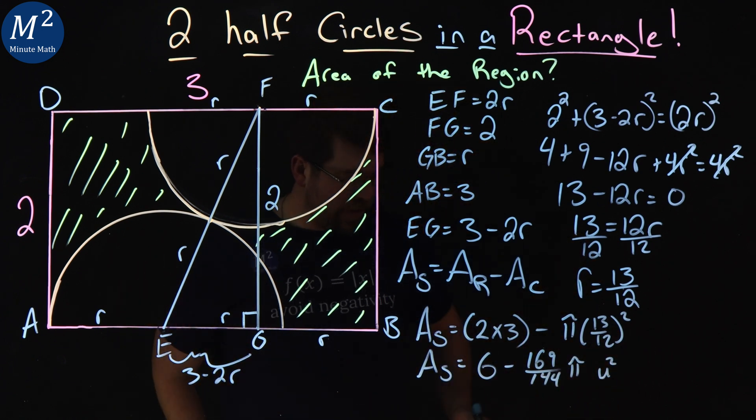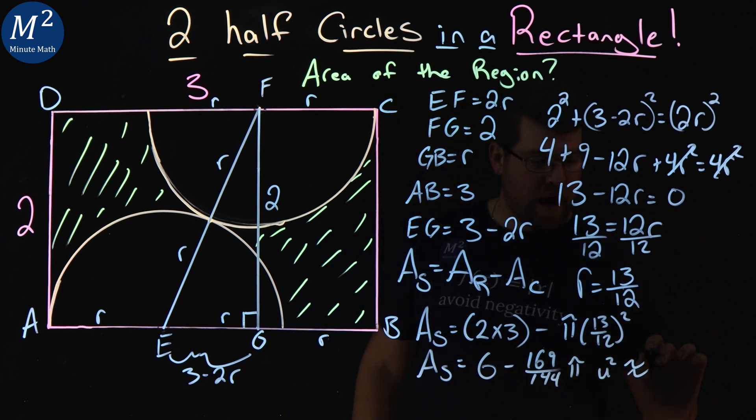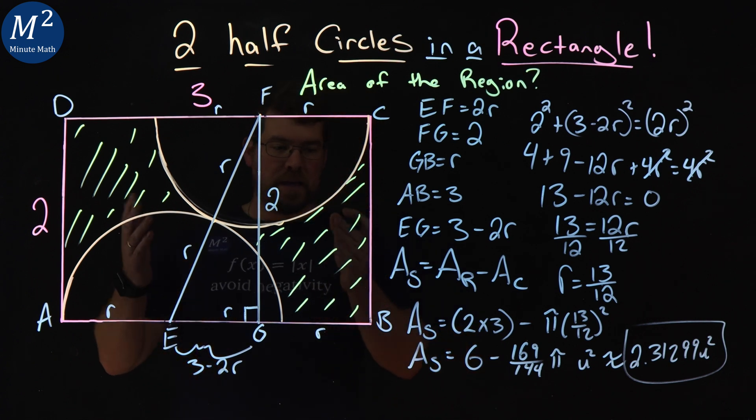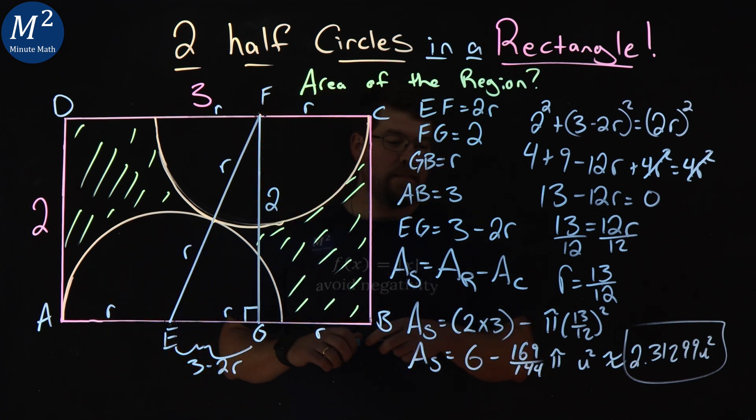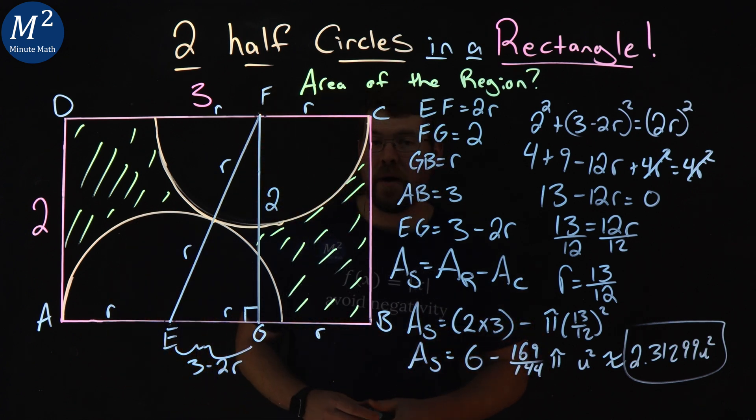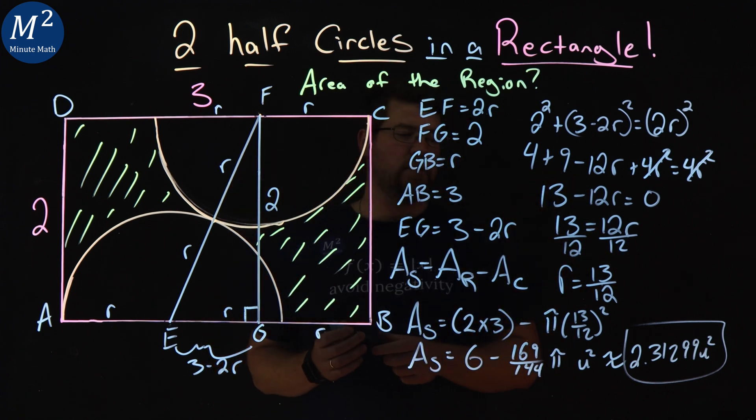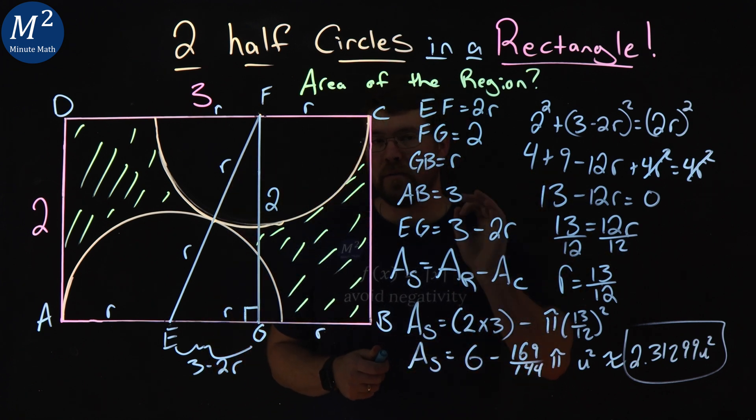At this point, I'll use my calculator here, and that's approximately 2.31299 units squared. And that's it. The area of our shaded region in green here was 6 minus 169 over 144 pi units squared, or the approximation 2.31299 units squared.